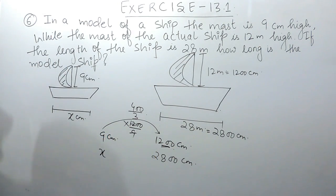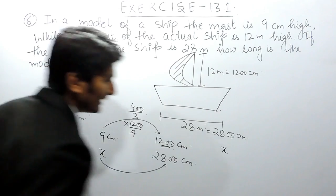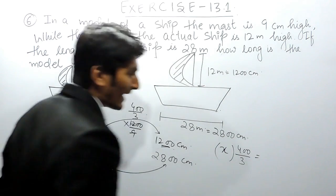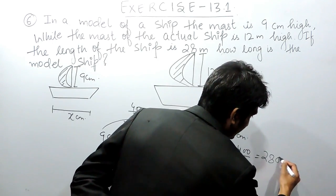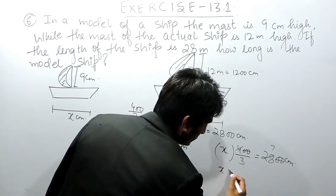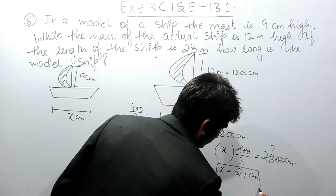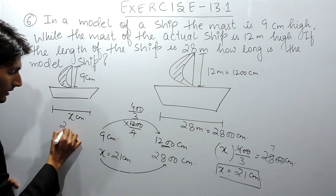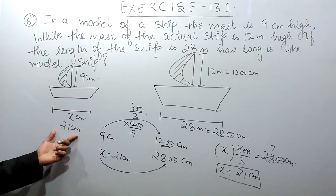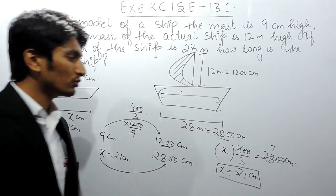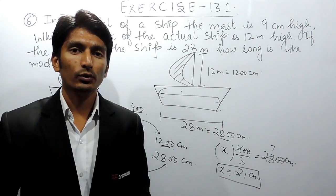The same case goes with the length of the model ship. So the length of the model ship, when enlarged 400 upon 3 times, gives us the actual length of the ship which is 2800 centimeters. You can cancel this out — this becomes 7 — and when you cross multiply, this will be 21 centimeters. So the length of this model ship must be 21 centimeters, and when enlarged 400 upon 3 times, we get the original ship whose length is 2800 centimeters. This is how you can solve this question.